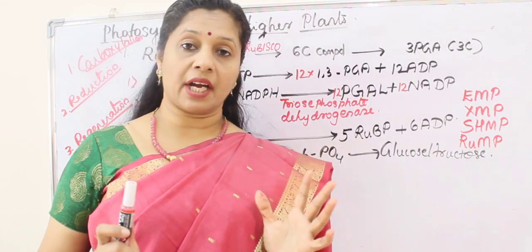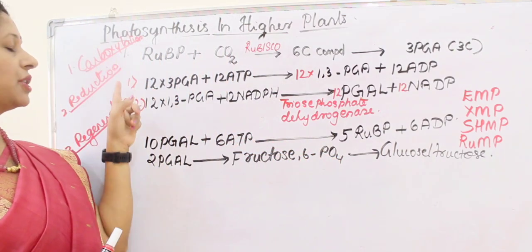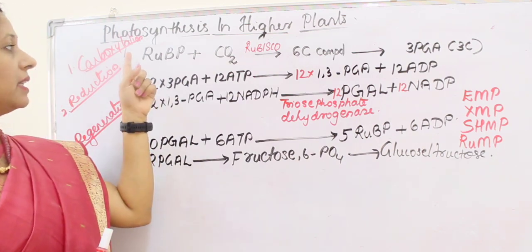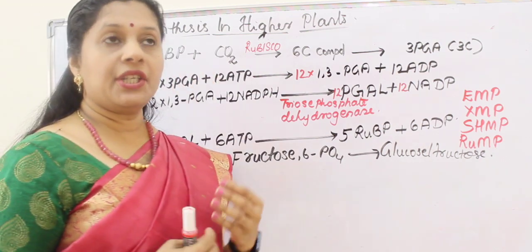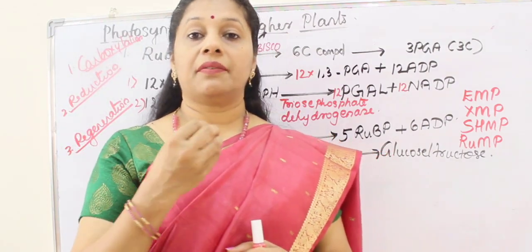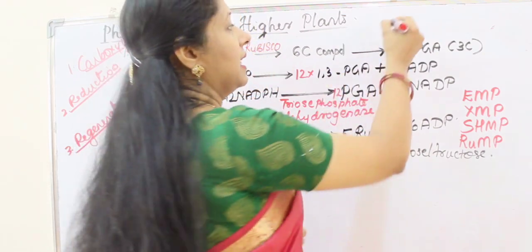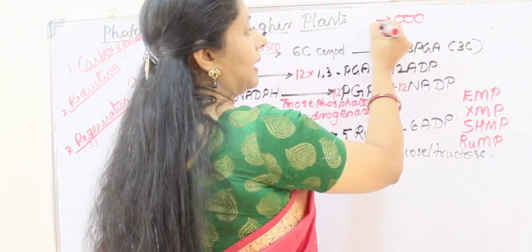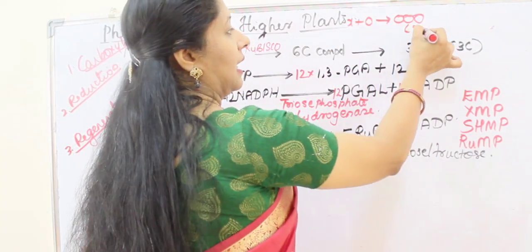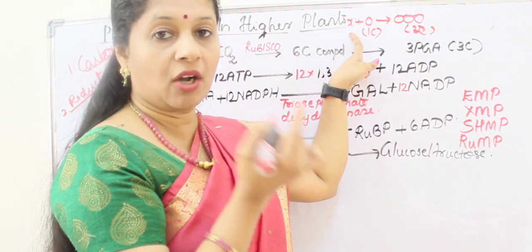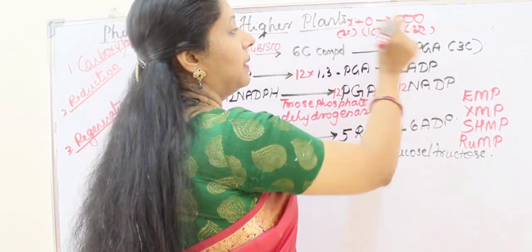In carboxylation, the carbon dioxide acceptor RUBP accepts carbon dioxide. Initially there was confusion because the first stable product is a 3-carbon compound. Since CO2 has one carbon, scientists assumed the acceptor would be a 2-carbon compound. However, they could not find a 2-carbon acceptor in plants.